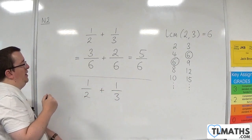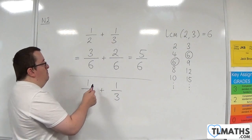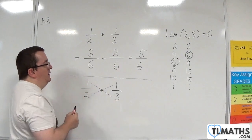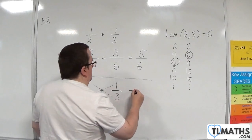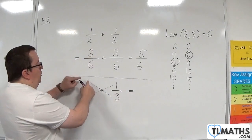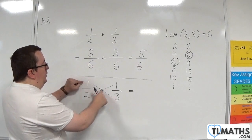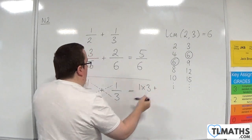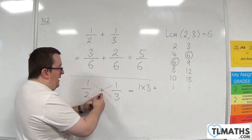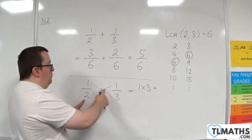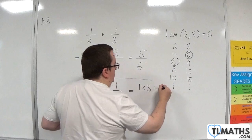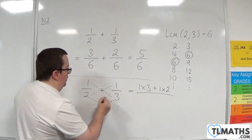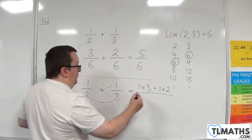Well, essentially what we do is we multiply diagonally, hence the idea of cross multiplication. So what do we do first? We do this leading diagonal first. We do 1 times 3, and then we add, because of the addition there, the other diagonal product, 1 times 2, over the product of the denominators, 2 times 3.